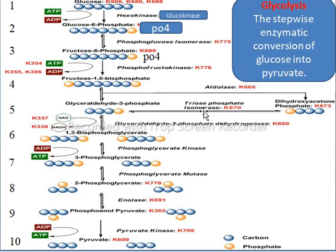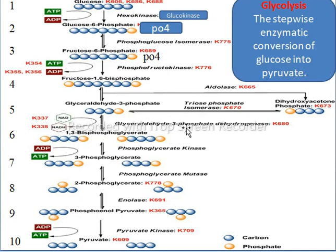So the oxidation of glyceraldehyde-3-phosphate will occur, converting it into another molecule known as 1,3-bisphosphoglycerate. A special enzyme involved in this step is glyceraldehyde-3-phosphate dehydrogenase. This enzyme reacts with NAD, which reacts with glyceraldehyde-3-phosphate and converts it into NADH.